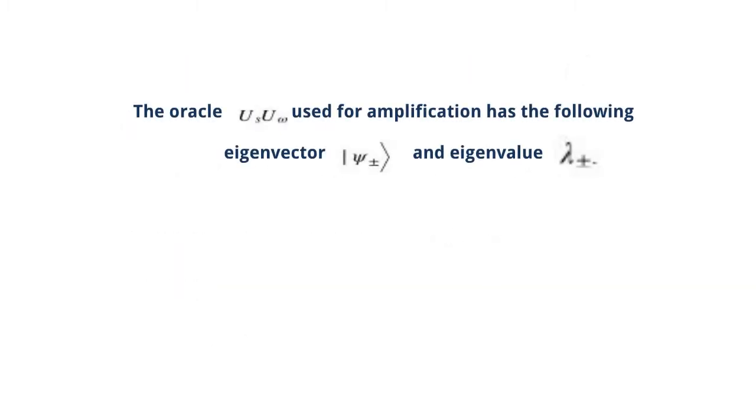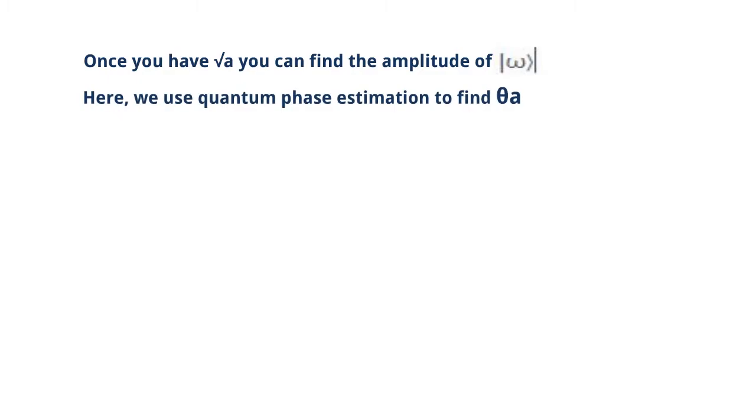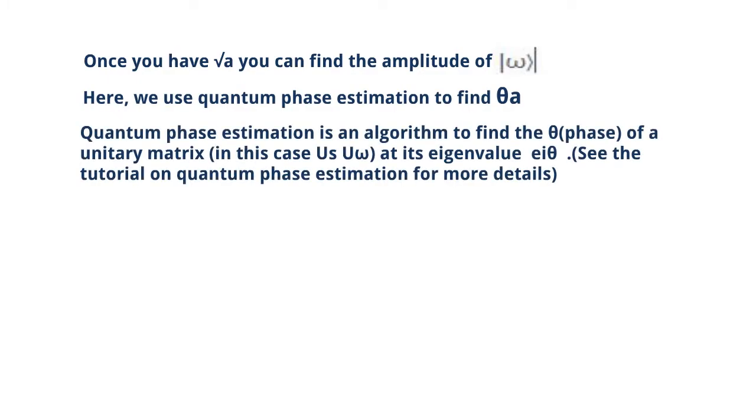The oracle used for amplification has the following eigenvector and eigenvalue. Once you have square root a, you can find the amplitude of omega. Here we use quantum phase estimation to find theta a. Quantum phase estimation is an algorithm to find the theta phase of a unitary matrix. In this case, Us U omega at its eigenvalue exponent of i theta. See the tutorial on quantum phase estimation for more details.